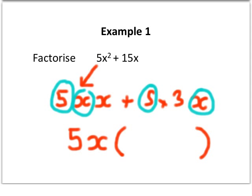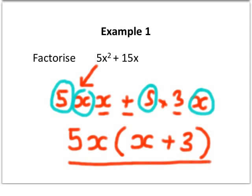And then literally all I need to write in the brackets is whatever's left over. So there's an x, a plus and a 3, so I'll just write that in the brackets x plus 3. So what we can say here is that 5x² plus 15x factorises to 5x then in brackets x plus 3. And that's our answer there underlined.